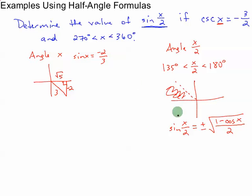The first thing is, sine of x over 2, is it positive or negative? Well, here's x over 2, it's in between 135 and 180. The sine is up, this vertical side is up, so it's the positive square root. So I have the positive square root of 1 minus the cosine of x.